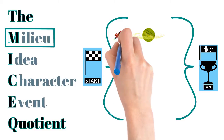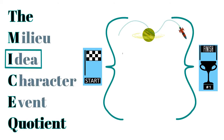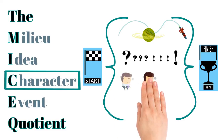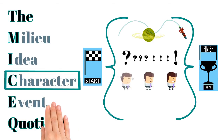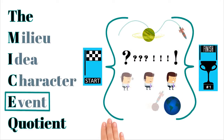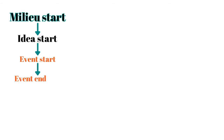A Milieu story starts with a big change of setting and environment and ends when the setting changes back. An Idea story begins with a big question and ends when it's answered. In a Character story, it starts with the main character dissatisfied with something about their life and ends when it's resolved. An Event plot starts with a big, driving problem and ends when the solution is found. In a complex story, like a novel, you'll have multiple layers of these plots nested within each other.